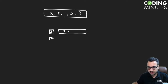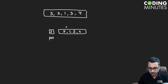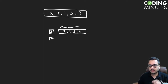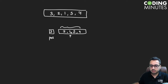We pick the minimum element from the unsorted part and bring it to the current position. The minimum in the unsorted part two, one, five, four is one, so we iterate over the unsorted part, find one, and swap it with three. Now one is at the front.